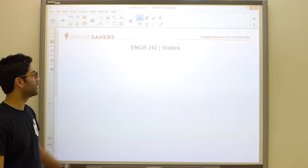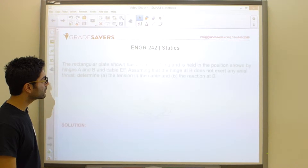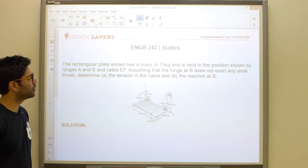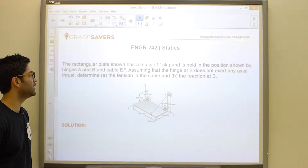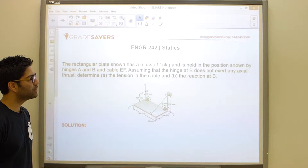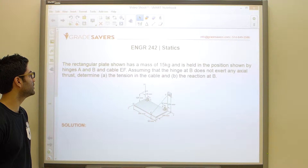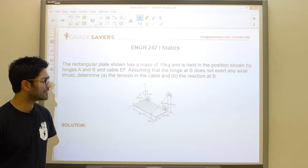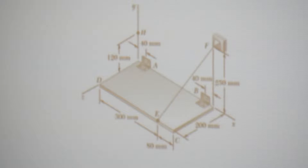Let's take a look at our next problem. The rectangular plate shown has a mass of 15 kilograms and is held in position by hinges at A and B and cable EF. Assuming that the hinge at B does not exert any axial thrust, determine the tension in the cable and the reaction at B. This is definitely an exam-type problem where they give you a three-dimensional shape with a whole bunch of forces and ask you to calculate something.